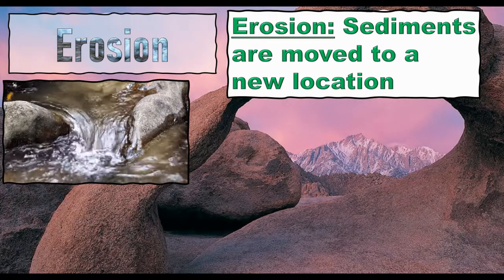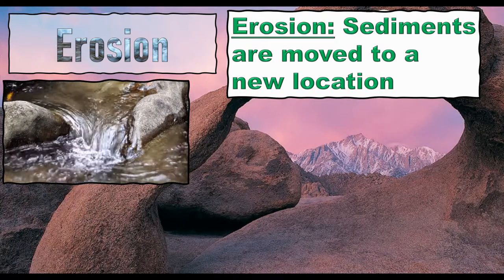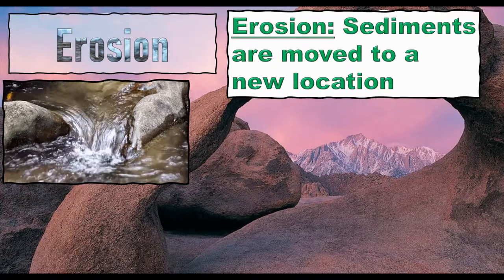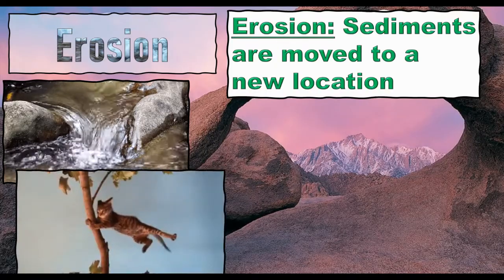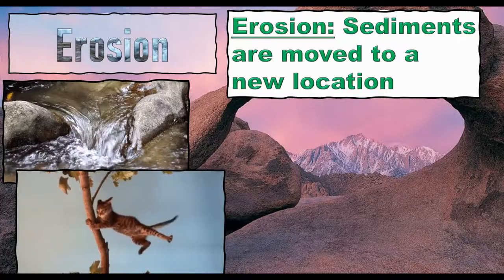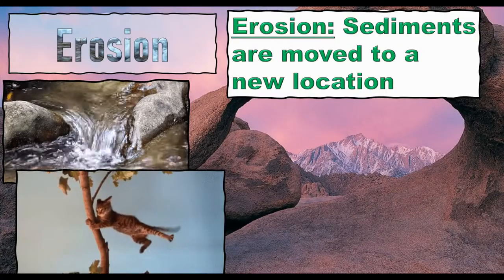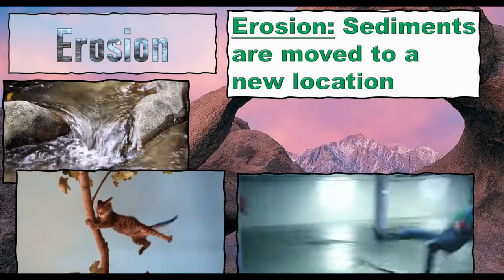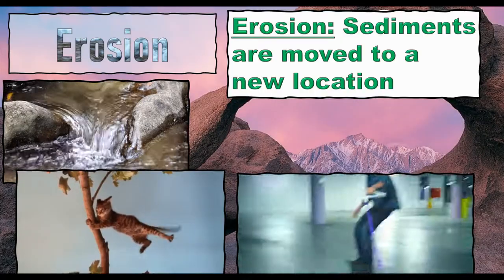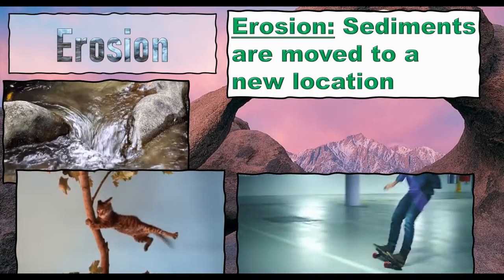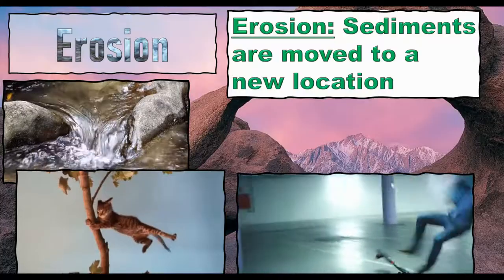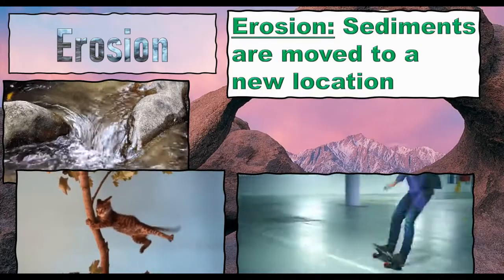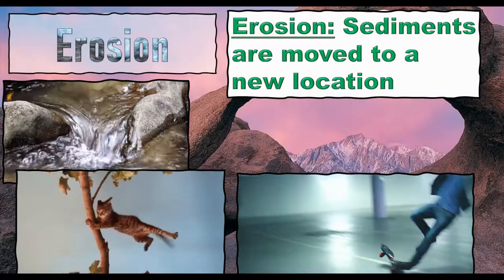This can happen through water — rivers, waterfalls, the ocean can all move sediments around. It can also happen through wind, which can blow sediments especially in desert areas. And it can happen simply through gravity. A great example of how gravity can move sediments is Yosemite Valley, which has very steep sides and rock falls all the time, caused simply by gravity.